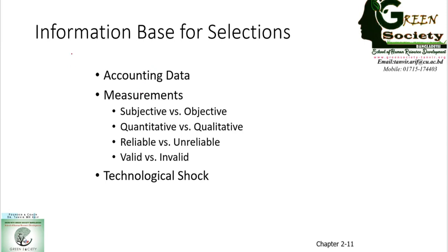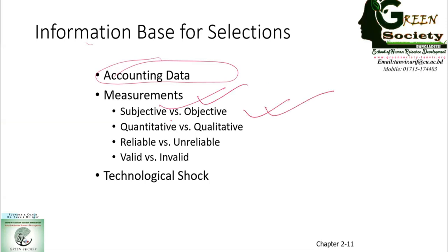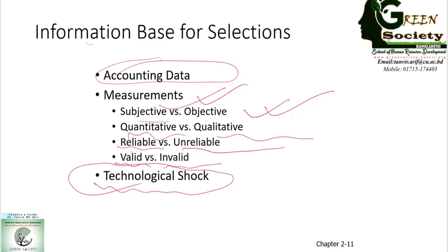What kind of information do you need? For numeric models we need accounting data — inflows, outflows under different categories, heads, and subheads. Besides these, we need to consider subjective and objective measurements, quantitative and qualitative measurements, reliable and unreliable measurements, valid or invalid measurements. You also need to consider technological shocks.